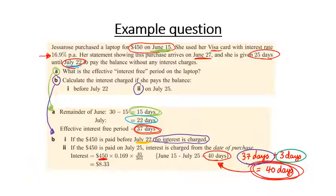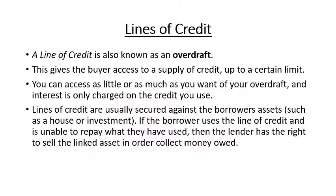The interest is calculated on the principal of $450 using the simple interest formula: principal multiplied by the interest rate, multiplied by the number of years. The 40 days is converted to years by dividing by 365. This gives her an interest charge of $8.33.